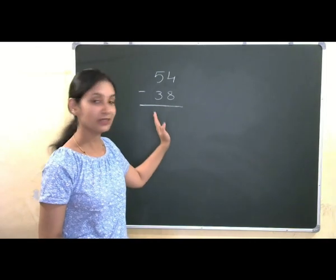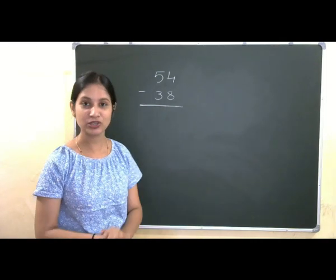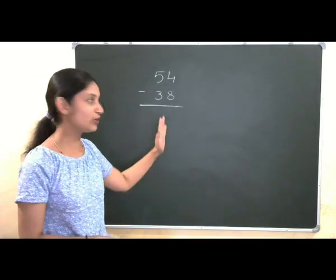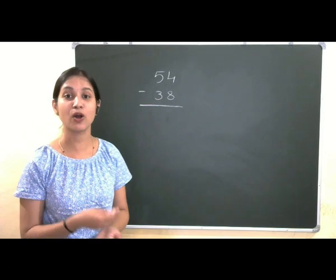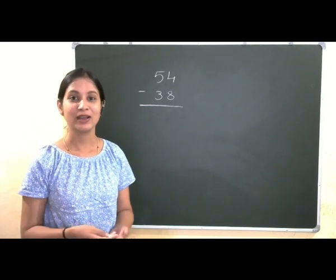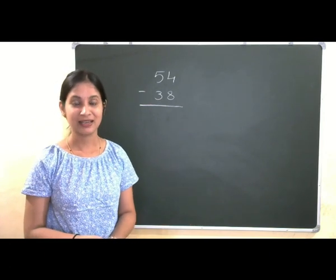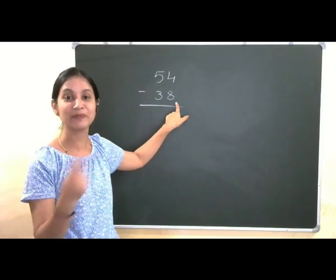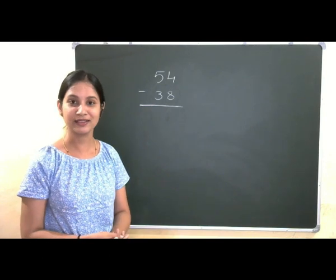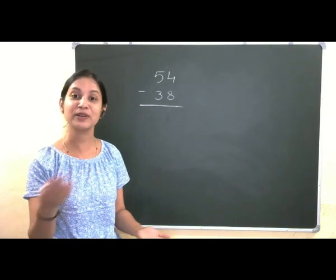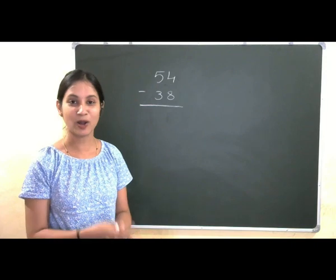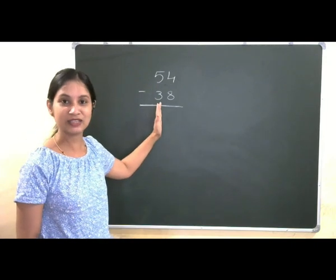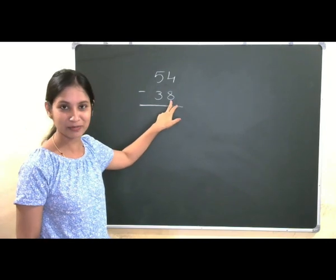Again, we will solve the same example using one more trick that is Base complement method. In order to go for that method, you need to know what is complement. Yes, you know we take Base as 10 then complement of 8 is 2. Very good. 8 plus 2 is 10. What is the complement of 4 then? It is 6 and complement of 6 is 4 and complement of 5 is 5 like that. So, it is now very easy to find the complement for this number.